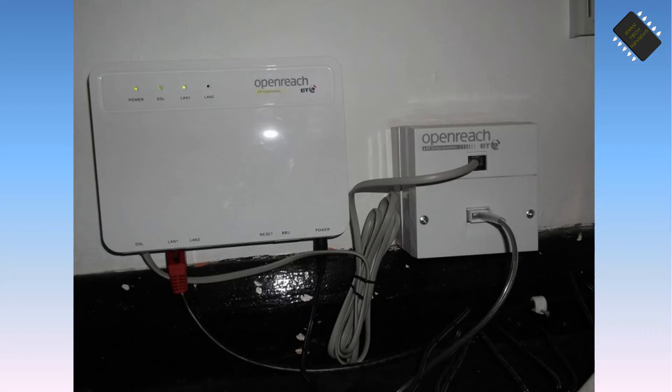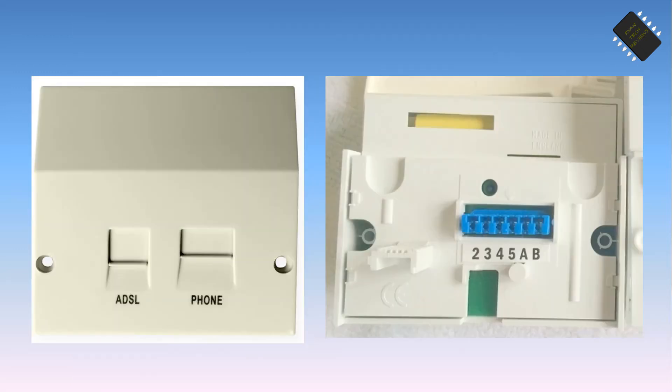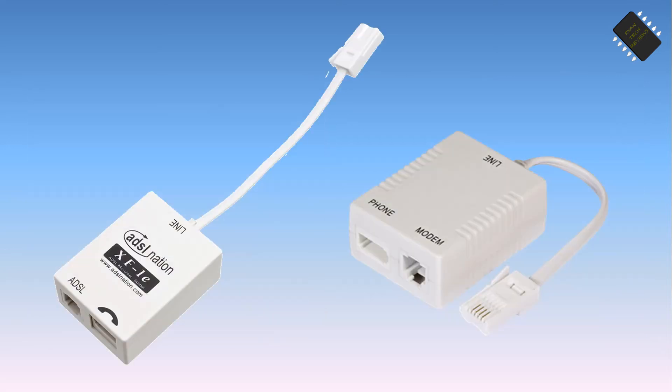Ideally you should have your modem connected directly to the Master Socket, as doing so minimises the length of cable the broadband signal travels through. If you do connect your modem to the Master Socket then you should use an ADSL or VDSL faceplate depending on your connection type. These faceplates contain a built-in filter to isolate the broadband signal at the Master Socket and prevent it picking up interference from your extension wiring. With one of these faceplates installed you can do without all your microfilters and connect your other phone line devices directly to an extension or Master Socket.